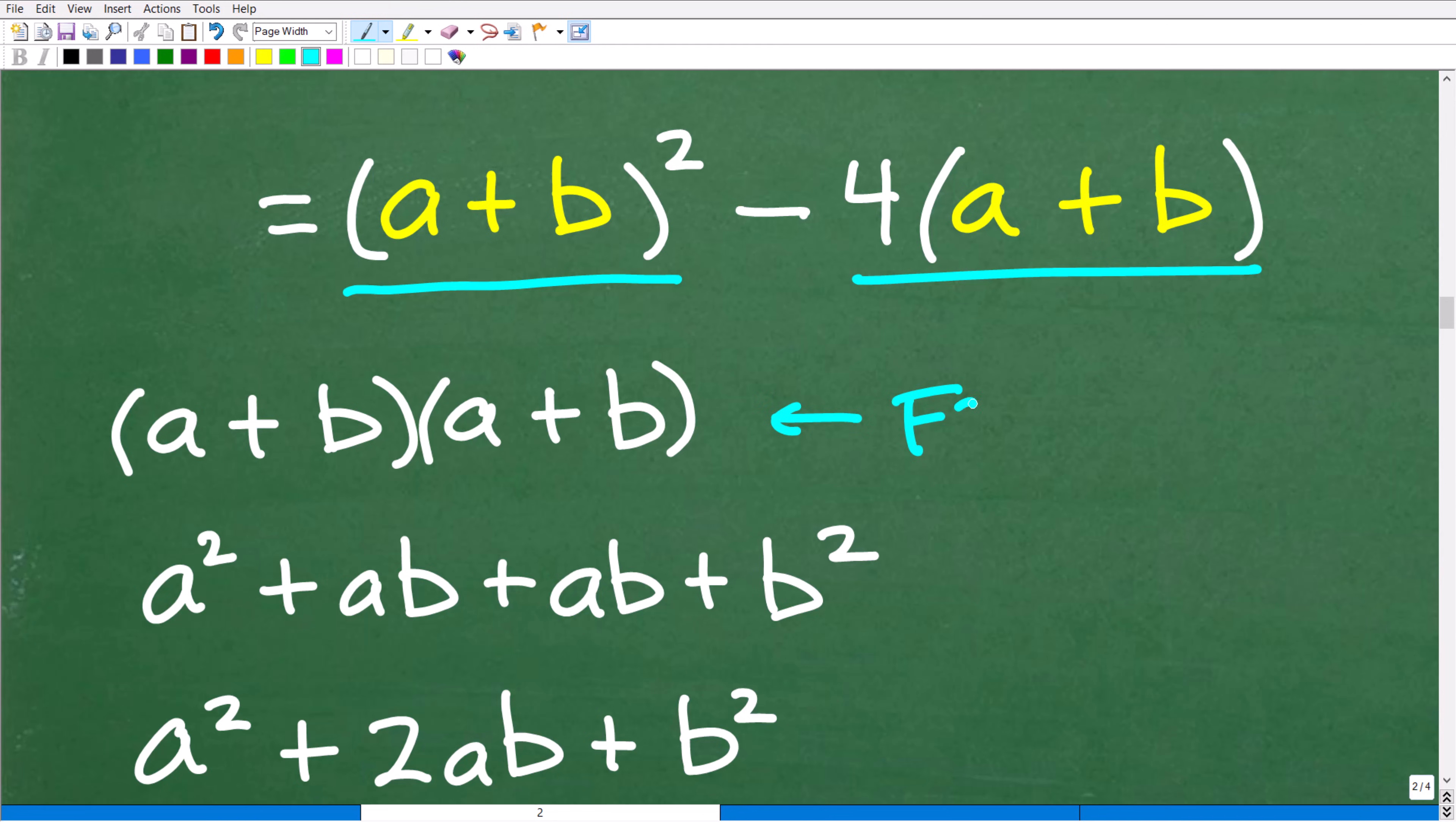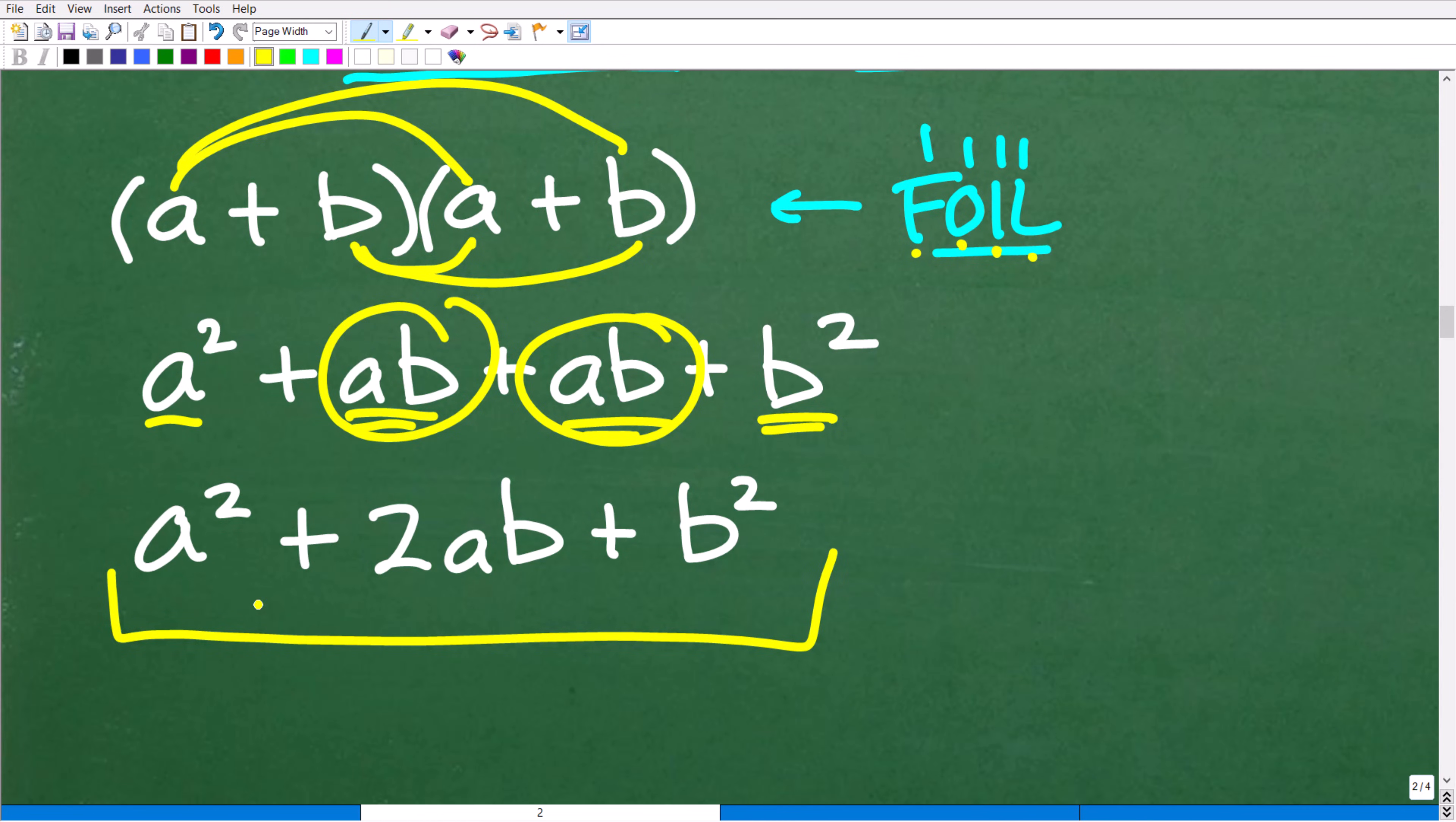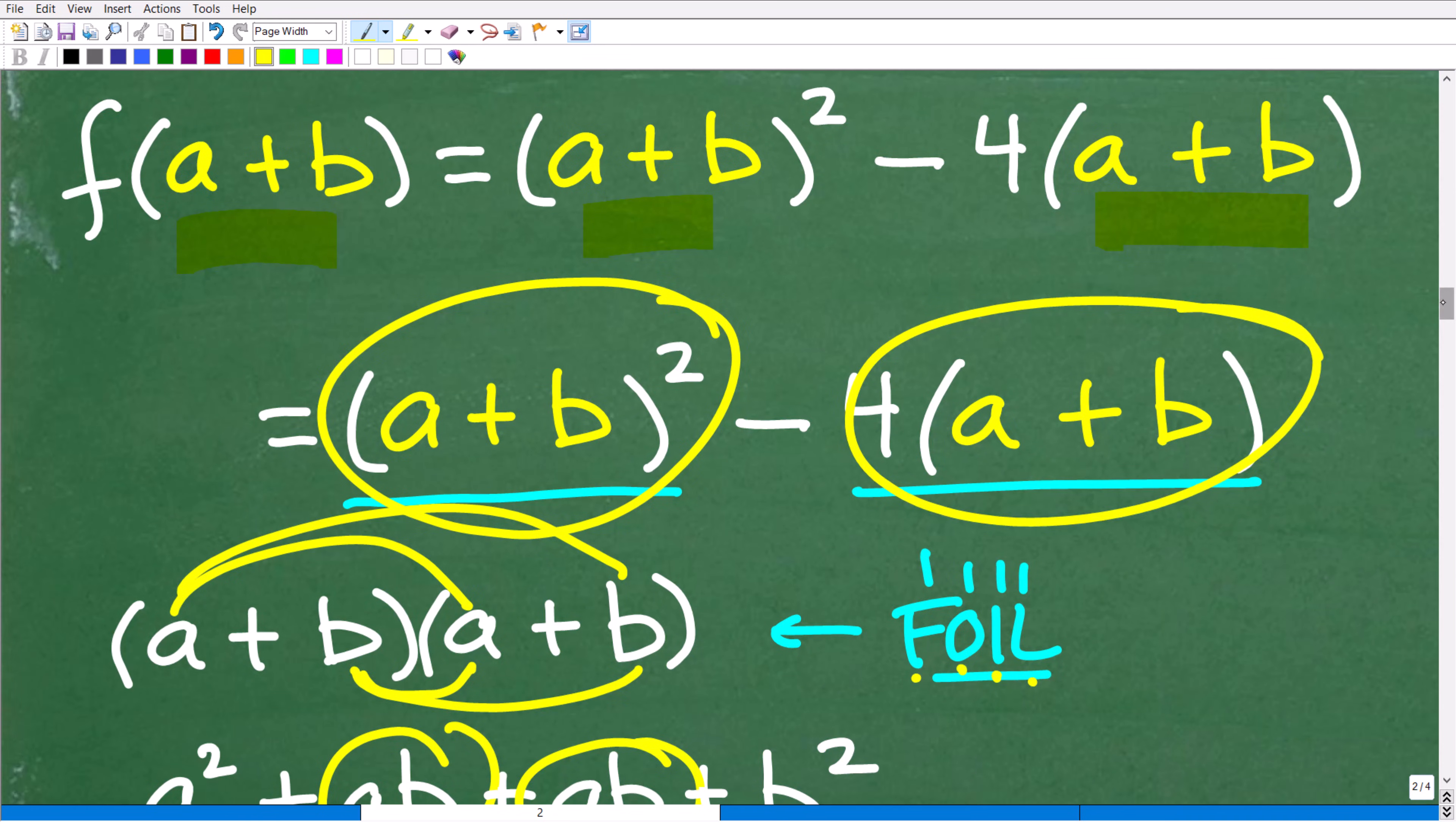Here you could use the FOIL technique or any other technique because we're multiplying binomials. FOIL stands for first, outer, inner, last. The first terms of each binomial: a times a is a². The outer terms is a times b. The inner terms is b times a, or ab. The last terms is b times b, which is b². So I have ab here and ab here, that gives me 2ab. So we have a² + 2ab + b². That is what this part of the problem is. However, we still need to clean this up as well.